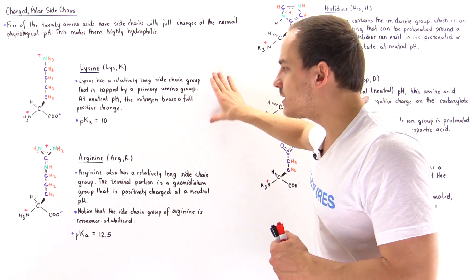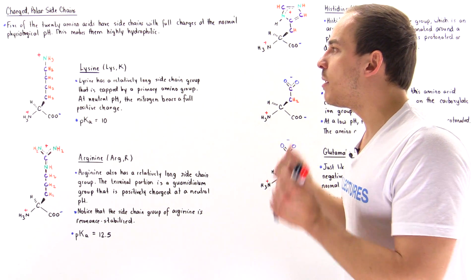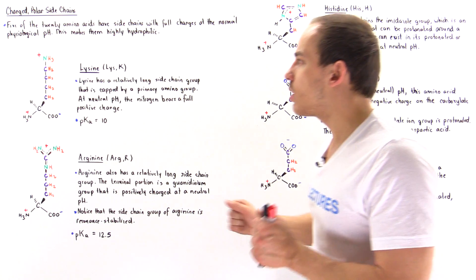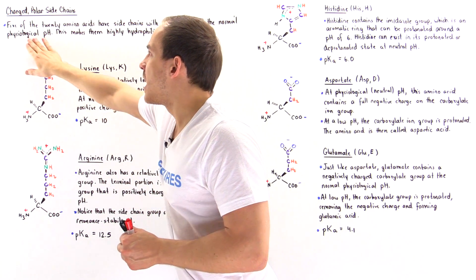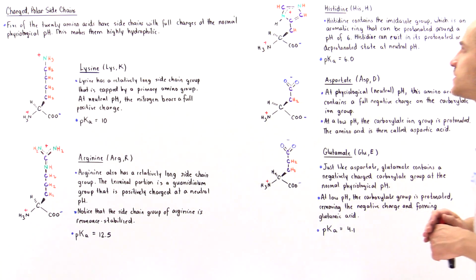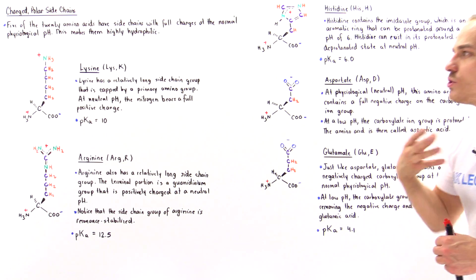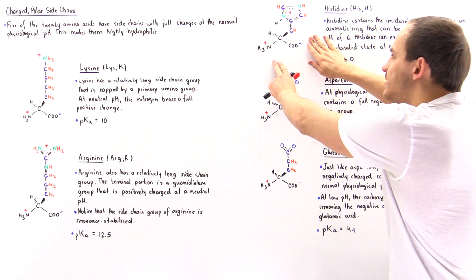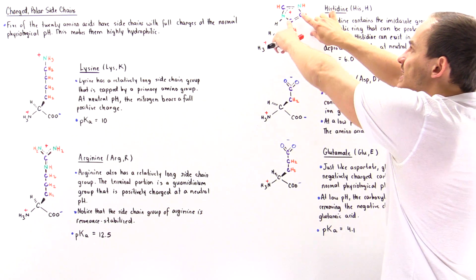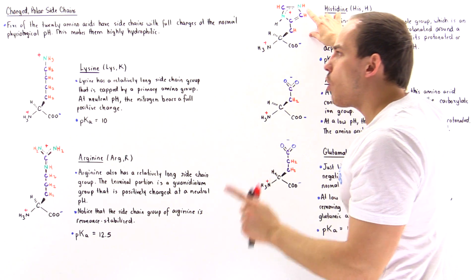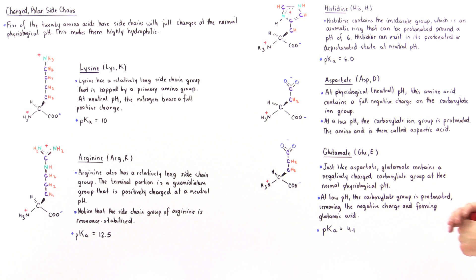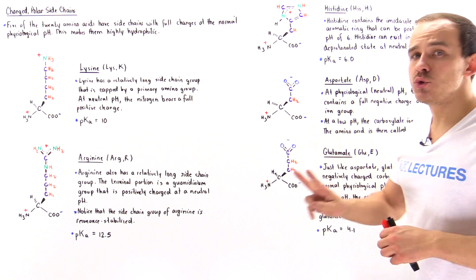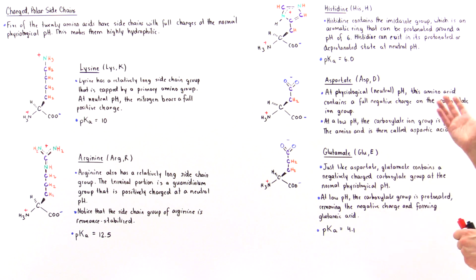So lysine and arginine are always positively charged on their side chain groups at the physiological pH of 7. Histidine is also basic, like lysine and arginine, but it can either be positively charged or neutral at the normal physiological pH. Now let's move on to the two acidic amino acids, aspartate and glutamate.